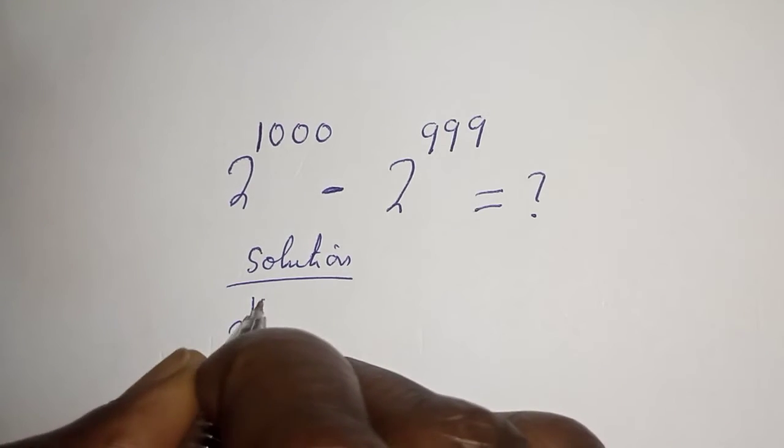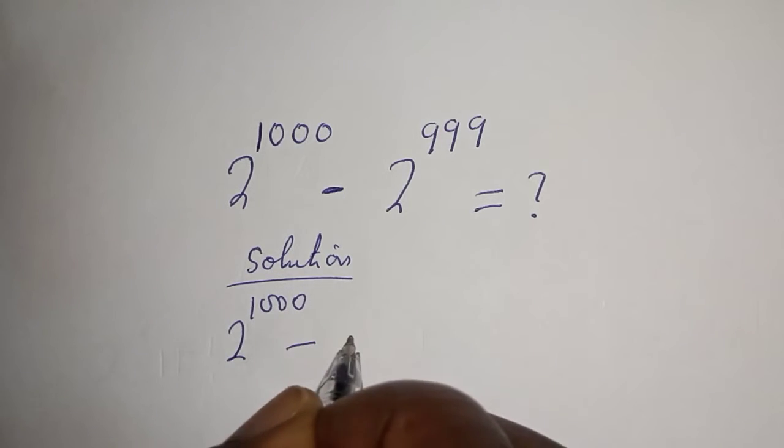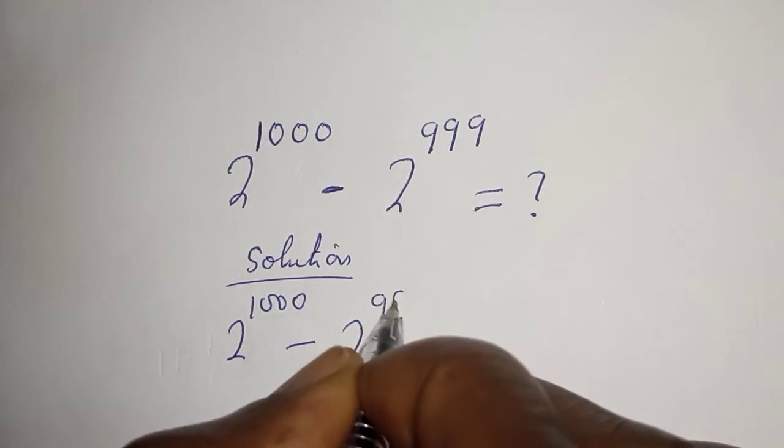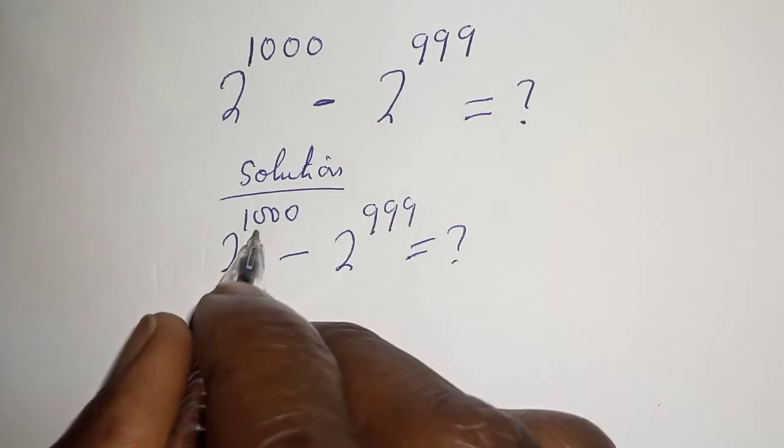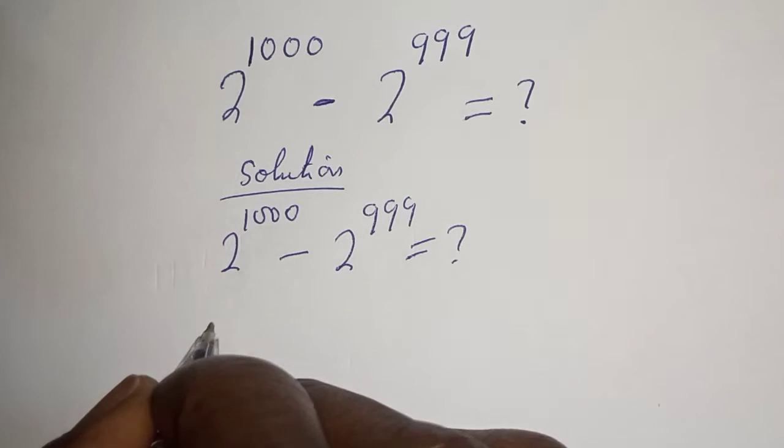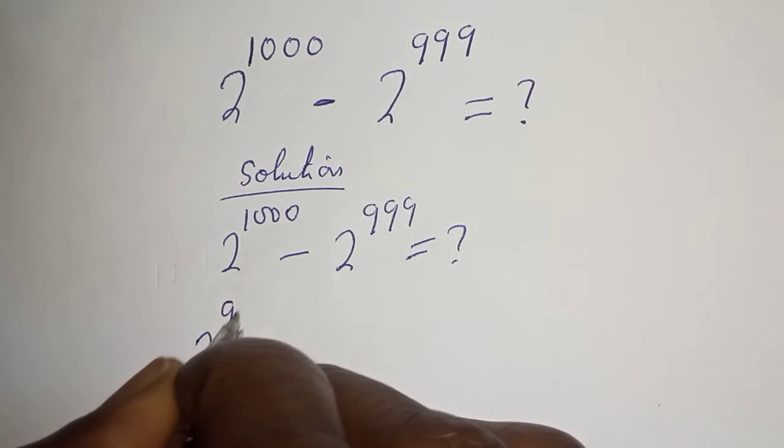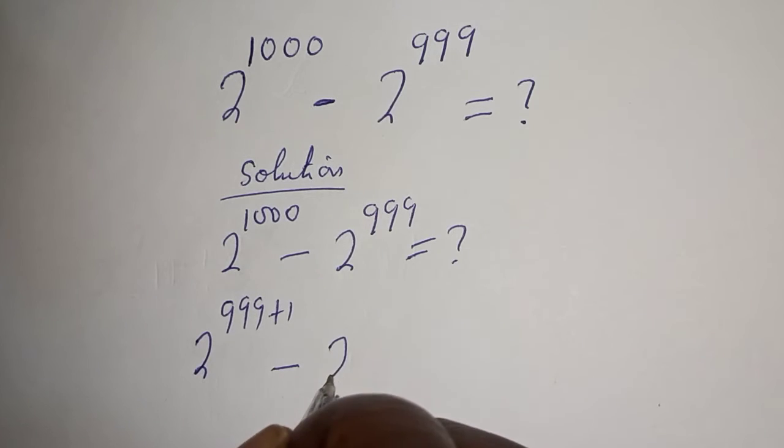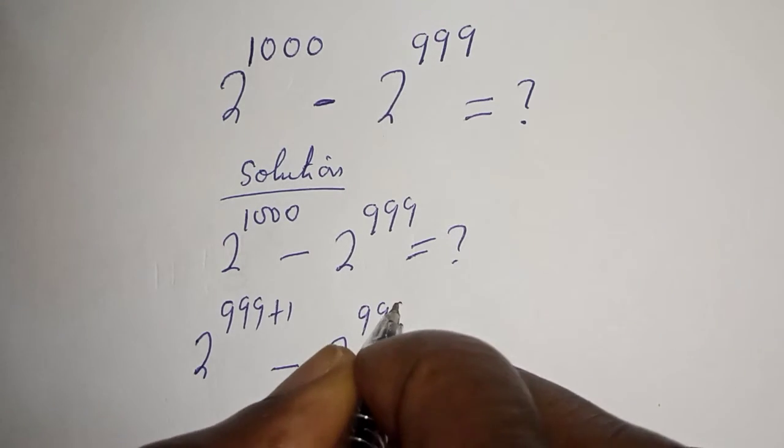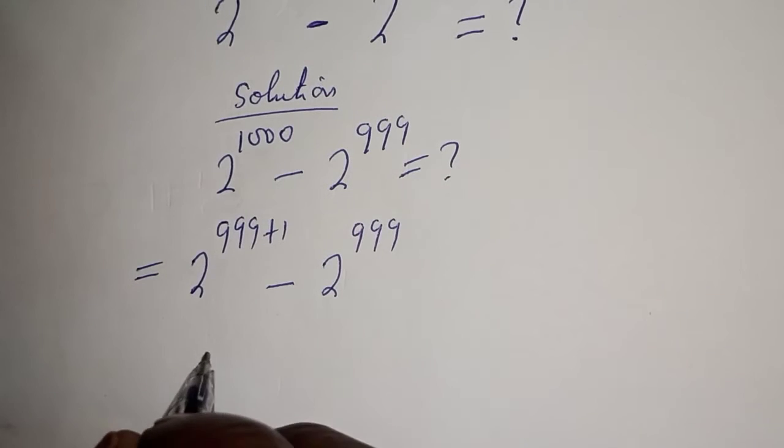Solution: 2 raised to power 1000 minus 2 raised to power 999 is unknown. Then 2 raised to power 1000 can be written as 2 raised to power 999 plus 1, minus 2 raised to power 999.